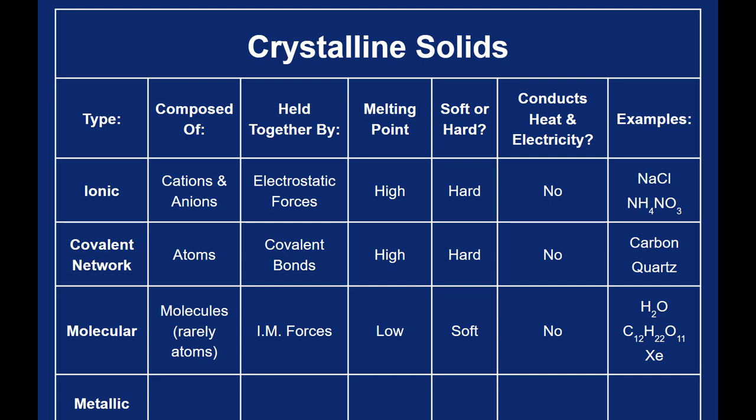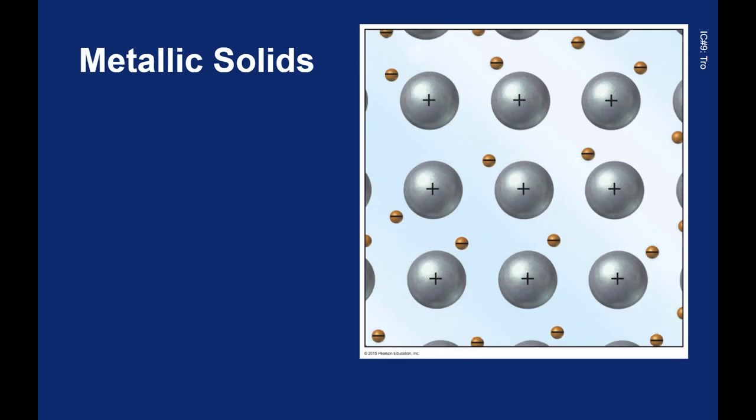And if you were to ever solidify a noble gas, even though they're made up of individual atoms, it would still be considered a molecular solid. The final type of solids on our list are metallic solids. Metallic solids are held together by metallic bonds.